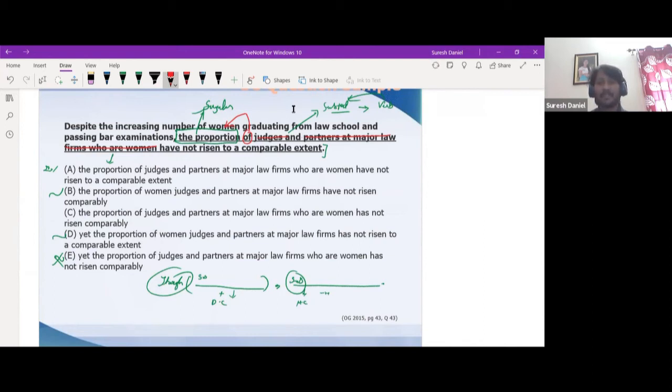It's 'a proportion,' which is the subject of the sentence. So when I see 'the proportion,' I should obviously pick the verb to be singular. So 'have' is incorrect. So always focus on the first words—this is a tip—middle words, and last words.